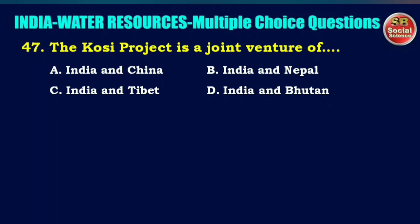The Kosi project is a joint venture of — options are India and China, India and Nepal, India and Tibet, or India and Bhutan. The right answer is option B: India and Nepal.